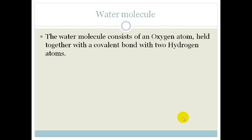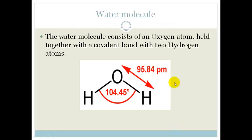So let's look at the water molecule. The water molecule consists of an oxygen atom held together with covalent bonds to two hydrogen atoms. You'll see from this picture that it has an interesting angular shape. Let's have a look at how it gets that shape.